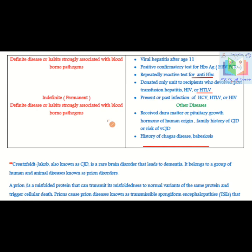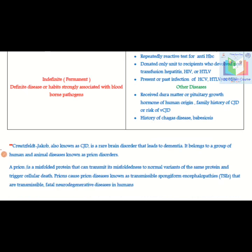Other conditions requiring permanent rejection include persons who received dura mater or pituitary growth hormone of human origin, family history of CJD or risk of vCJD — where CJD stands for Creutzfeldt-Jakob disease — or history of Chagas disease or Babesiosis.